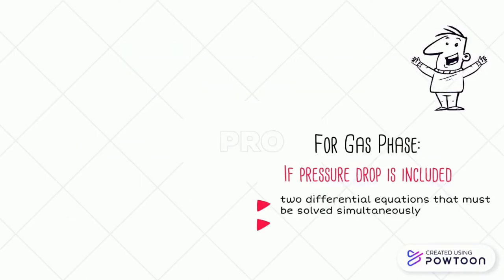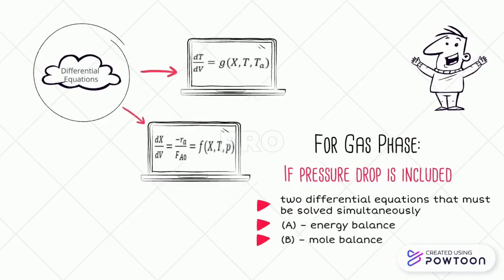Now, let's apply the algorithm learned before to flow reactors. For the gas phase, if the reaction is in gas phase and pressure drop is excluded, the two differential equations A and B must be solved simultaneously. These differential equations describe the change in temperature with volume as we move down the reactor. A is the differential equation of energy balance, meanwhile B is the differential equation of mole balance.